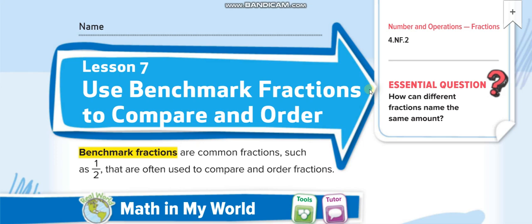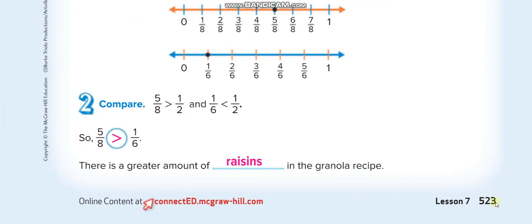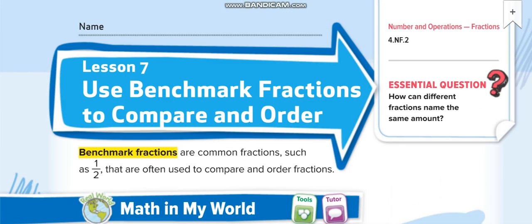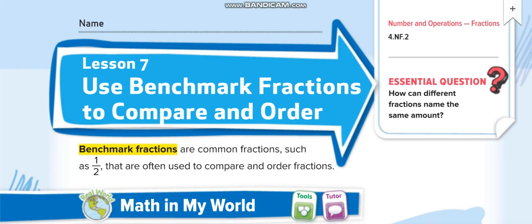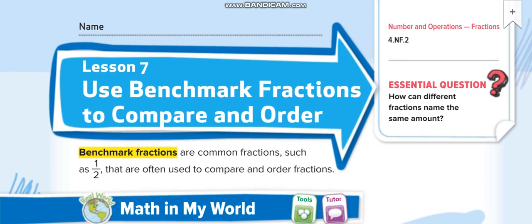Hey everyone, welcome back to my channel Learn Math with Mr. Saad. Today's lesson is for Grade 4, Chapter 8, Lesson 7: Use Benchmark Fractions to Compare and Order, page number 523. As you know, we already compared and ordered fractions in the last lesson by making the denominator same, making the numerator same, by LCM, or using the butterfly rule — cross multiplication.